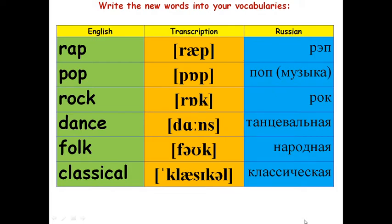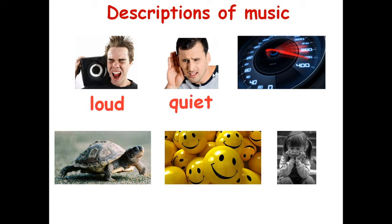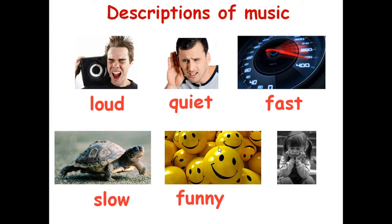Видео можете поставить на паузу. And let's meet with some descriptions of music. А сейчас давайте познакомимся со словами, при помощи которых мы можем описать тот или иной вид музыки. Музыка ведь может быть громкой, тихой, быстрой, медленной, веселой или грустной. Итак: Loud – тихая. Quiet – быстрая. Fast – медленная. Slow – веселая. Funny – грустная. Sad.